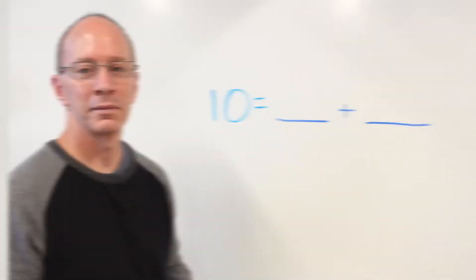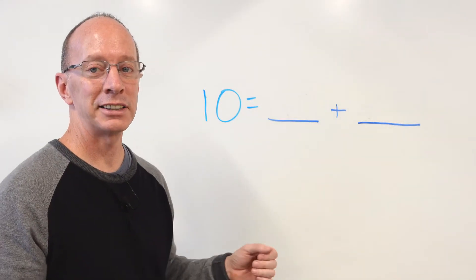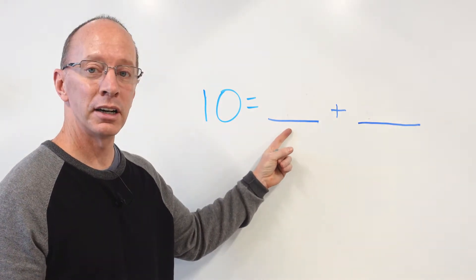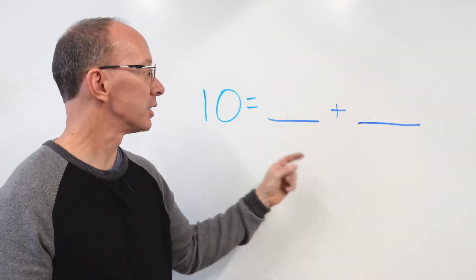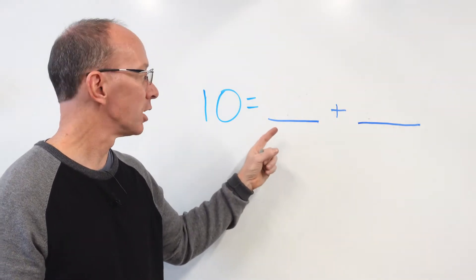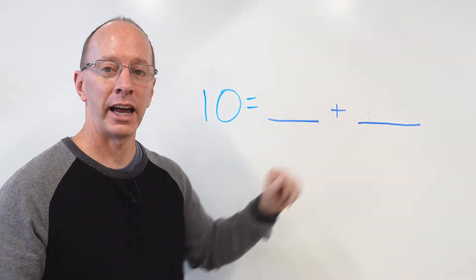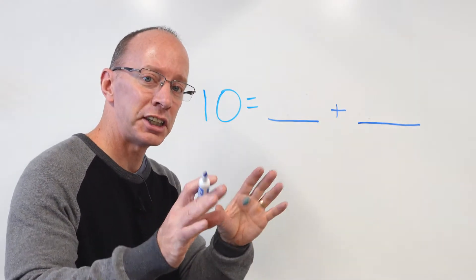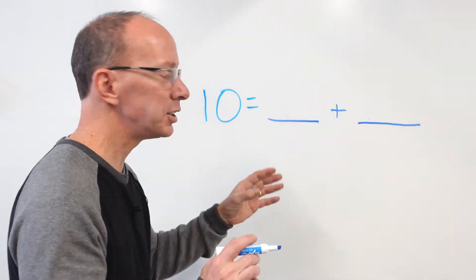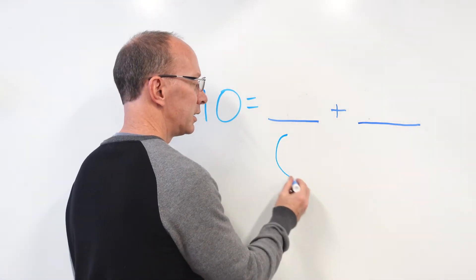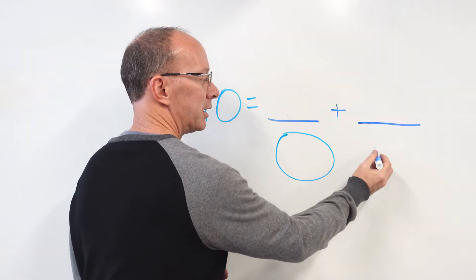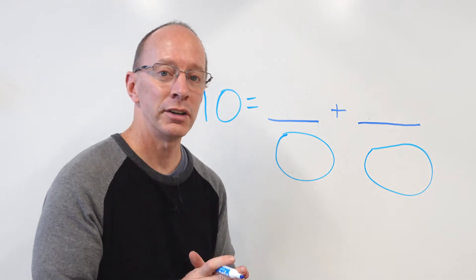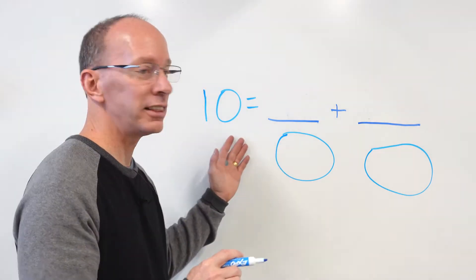All right, let's do another one. Here is my next equation. I have 10 equals some number here plus another number. I took those cups off because I want to teach you a different technique. What I want you to do is draw a big circle and another big circle right underneath each blank, and we are going to use tally marks to find the answer.